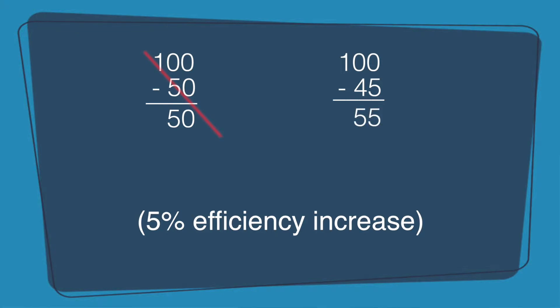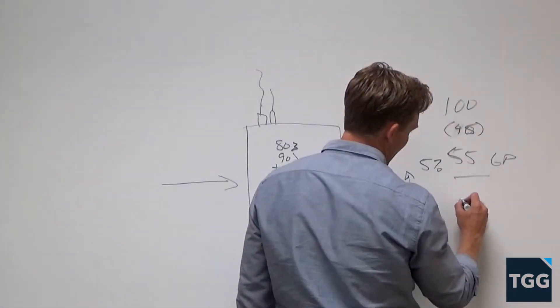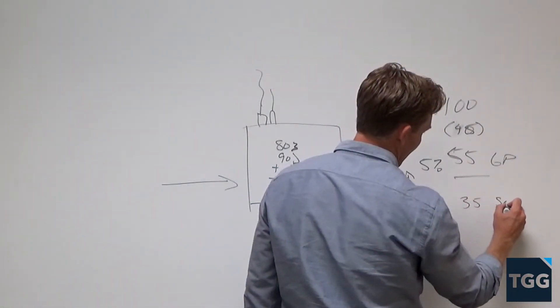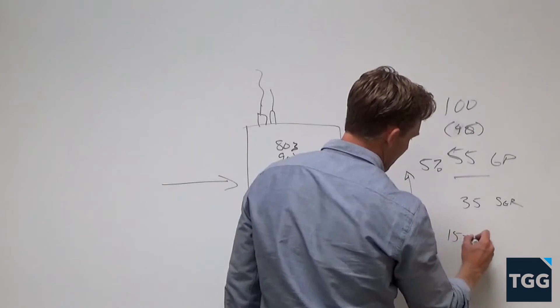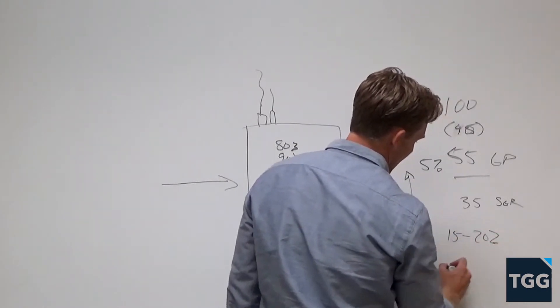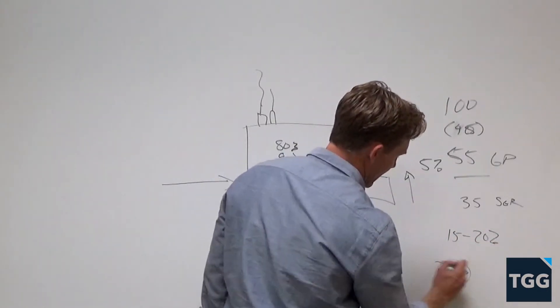which puts you at a 55% gross profit, which takes your profitability on a 35% SG&A from 15% to 20%, an increase of 33% in profitability.